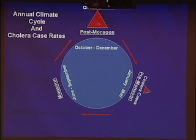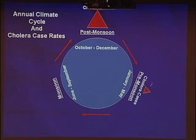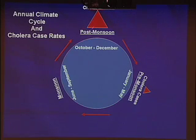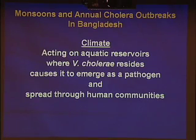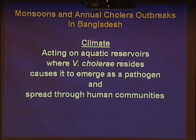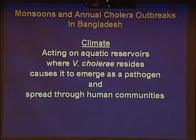This is the major peak of cholera cases, always occurring in the immediate post-monsoon period, followed by the hot dry season with a small peak, and then once again into the monsoon season. This phenomenon of timing a climate cycle with an epidemic infectious disease is fundamental. The hypothesis — now proven pretty much beyond any doubt — is that climate acting on aquatic reservoirs where this organism resides causes it to emerge as a pathogen and spread through human communities.